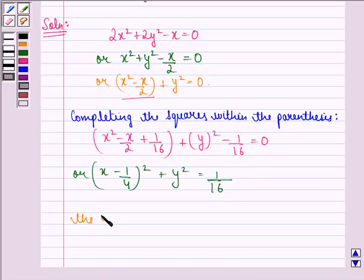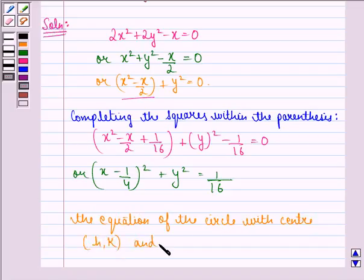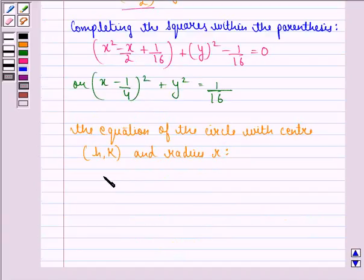We know that the equation of a circle with center (h,k) and radius r is (x - h)² + (y - k)² = r². In our case, this equals 1/16.